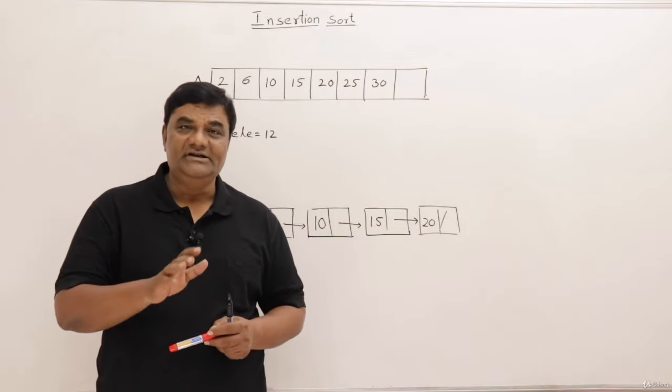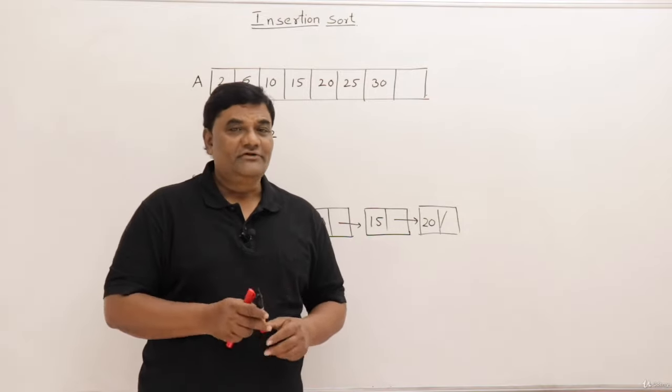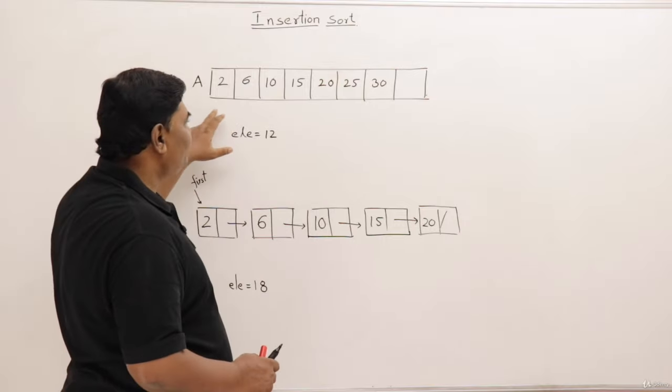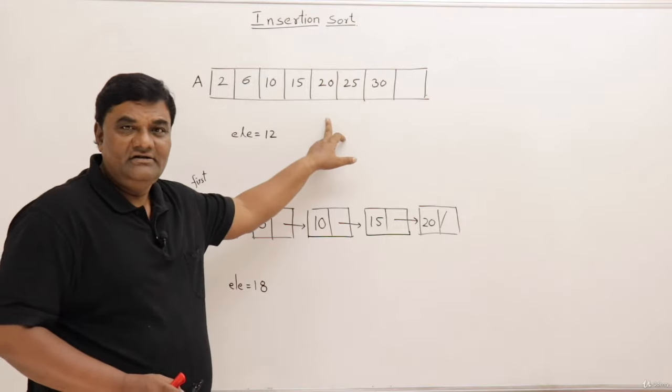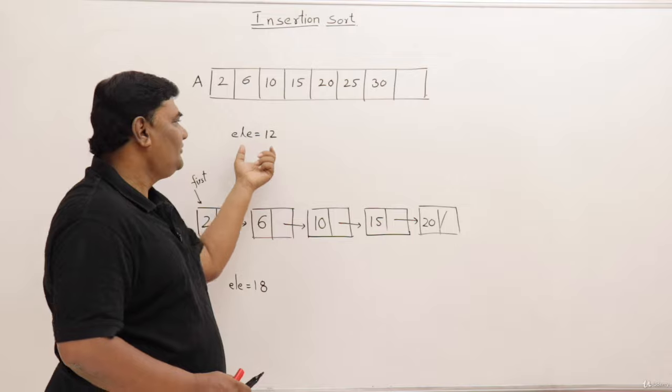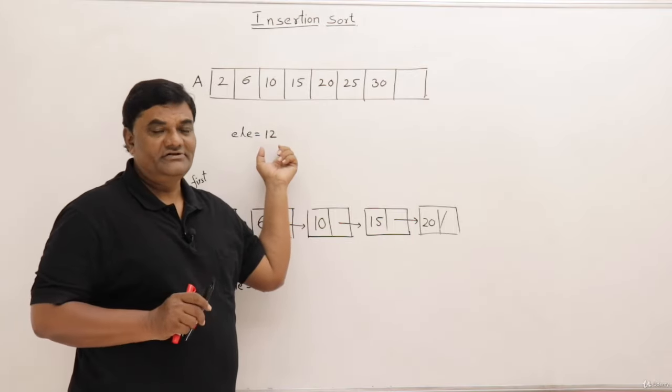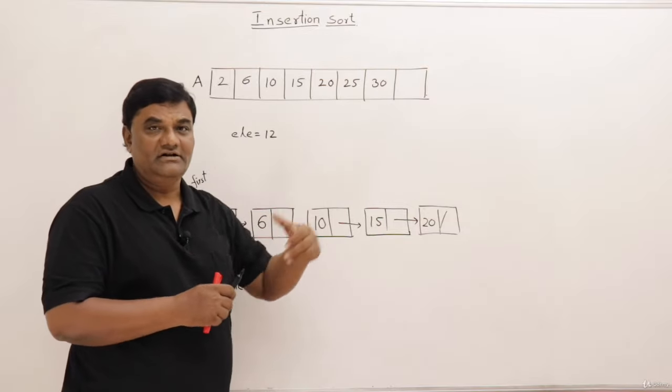So let us understand what does it mean by insertion here. For understanding insertion I have taken an array, a list of elements and these elements are already sorted and in this list I want to insert 12 in a sorted position. So it should be inserted at a place where it should come in a sorted order.